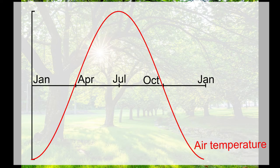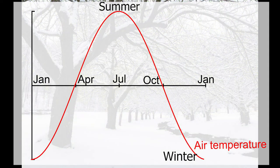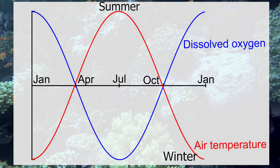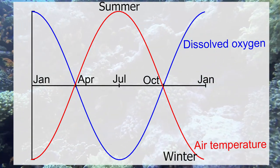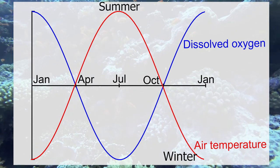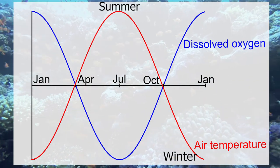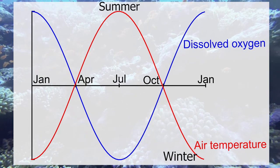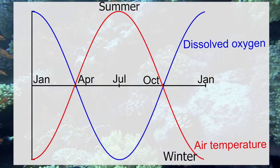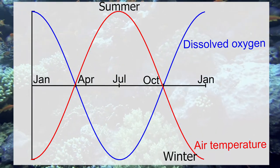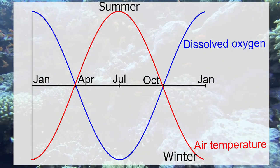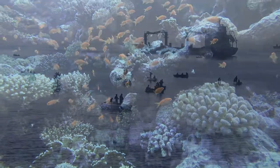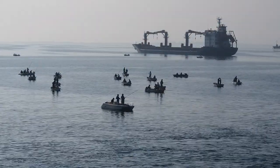Temperatures on Earth change with the seasons, reaching highs in the summer and lows in the winter. Similarly, there are processes in the ocean that are affected by Earth's temperature, such as the level of dissolved oxygen in the water, that also change with the seasons. Oxygen more readily dissolves in water that is colder, thus oxygen levels in water are high in the winter and low in the summer. Due to the cyclical nature of these types of processes, they are often modeled and predicted using sine or cosine waves.